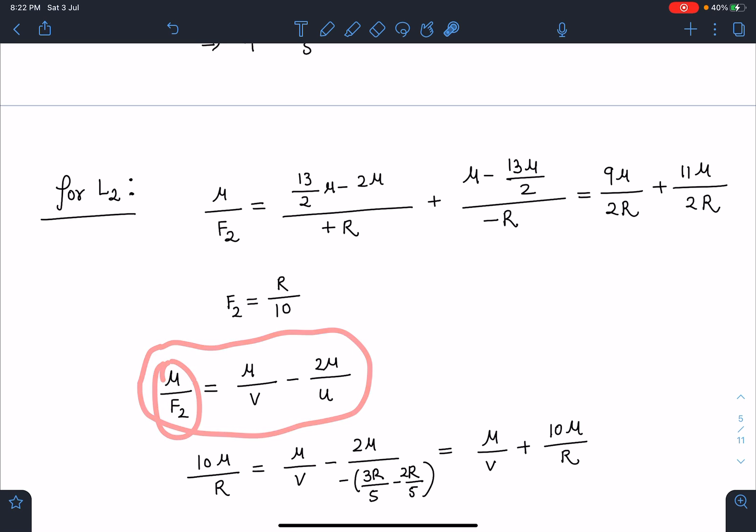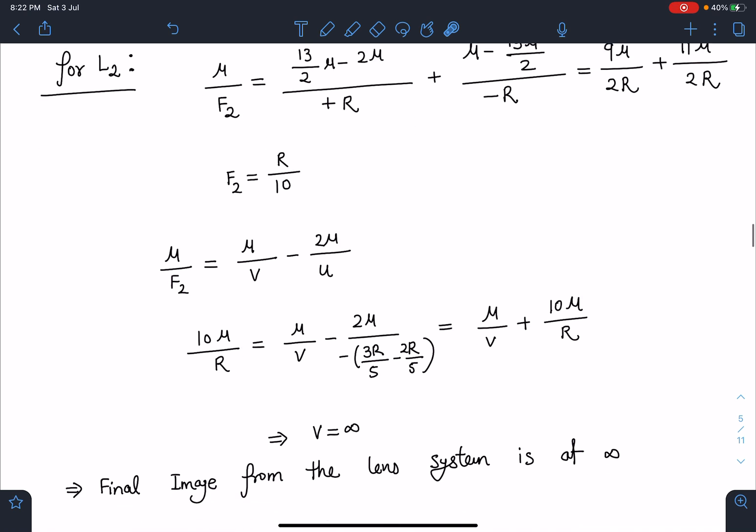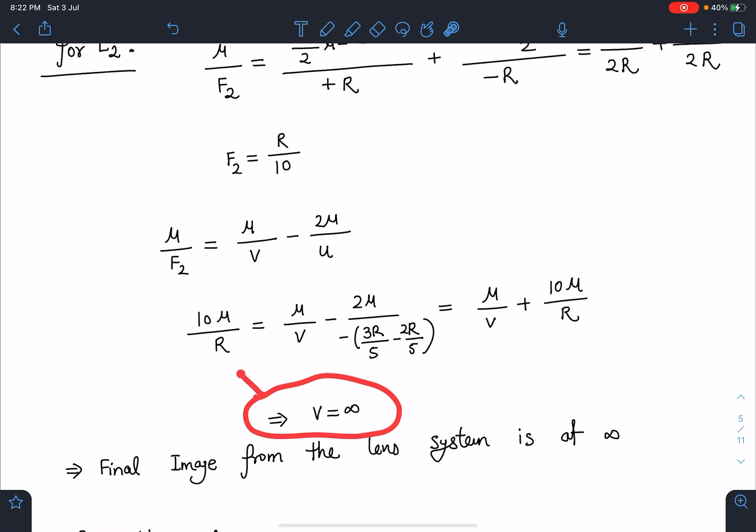Now I will be using the modified lens equation: final medium by f equals final medium by image distance minus initial medium by object distance. Object distance is 3R/5 - 2R/5. When I substitute all these values, you can see how nicely v is coming at infinity. So the meaning is the final image from the lens system is at infinity.